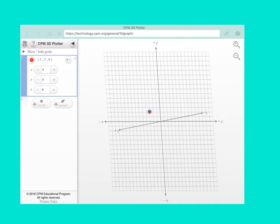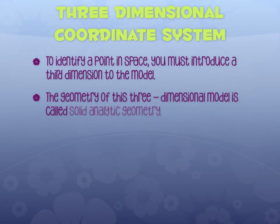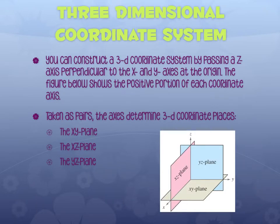By definition, to graph a three-dimensional coordinate system, you identify the point in space — you've got that third dimension. The geometry of this three-dimensional model is called solid analytical geometry. That's where the separation between pre-calc honors and pre-calc analytical gets its name; they dive a bit deeper into this. We're just going to scratch the surface. You can construct a 3D coordinate system by passing the z-axis perpendicular to the x and y axes at the origin.